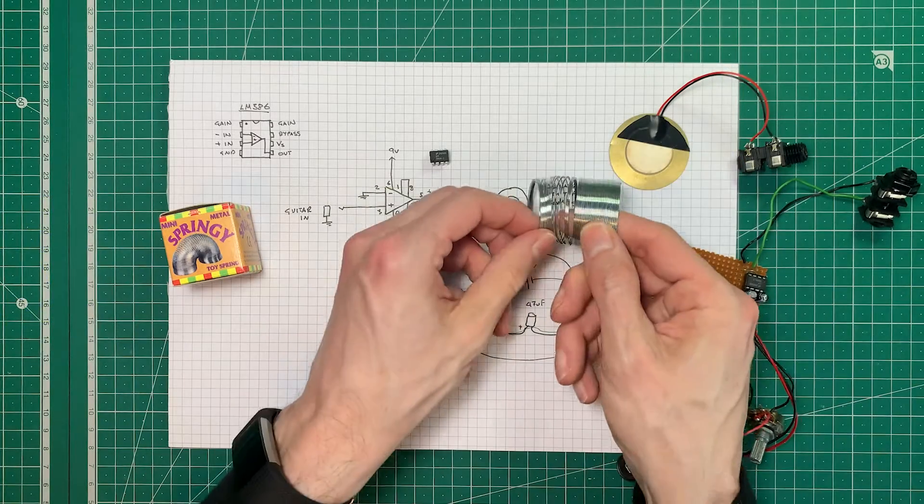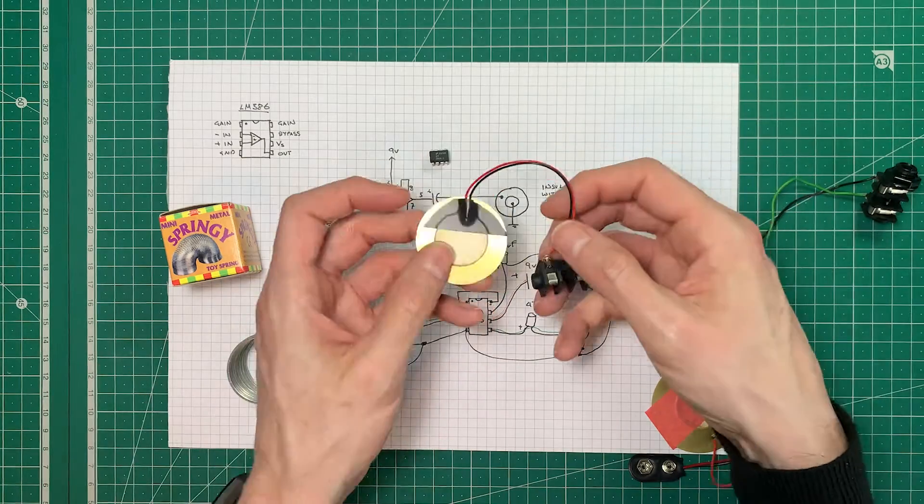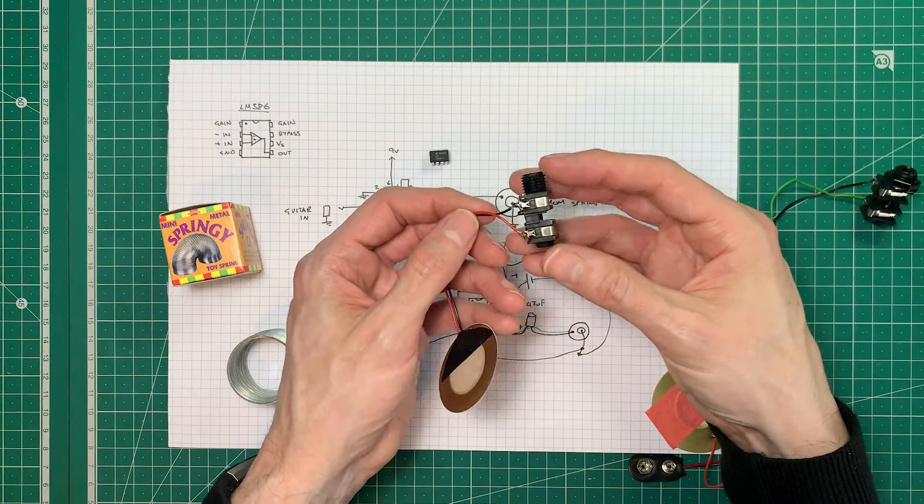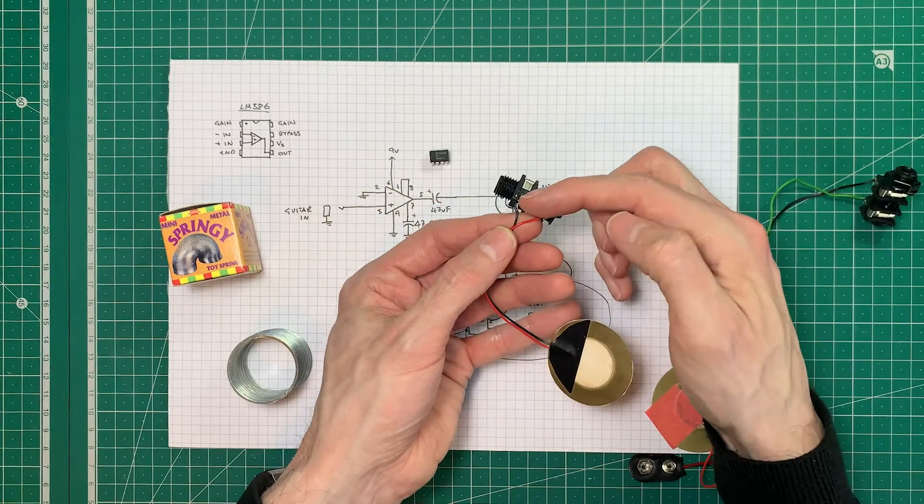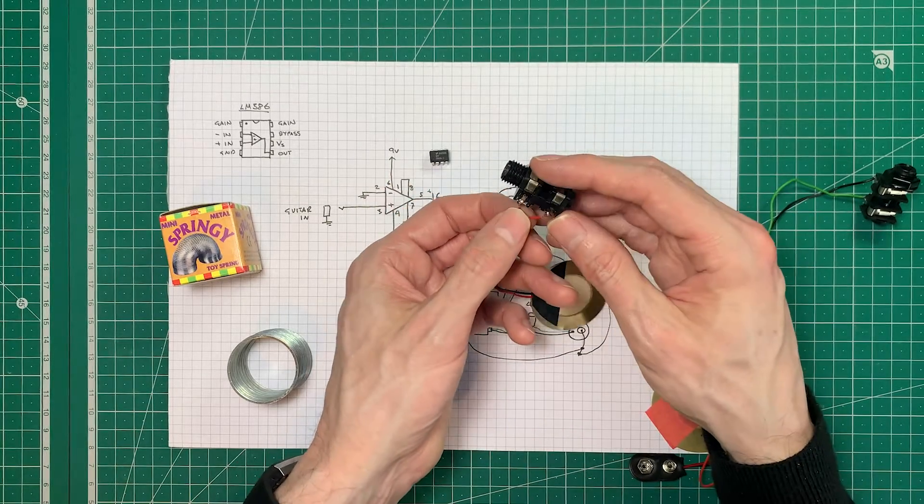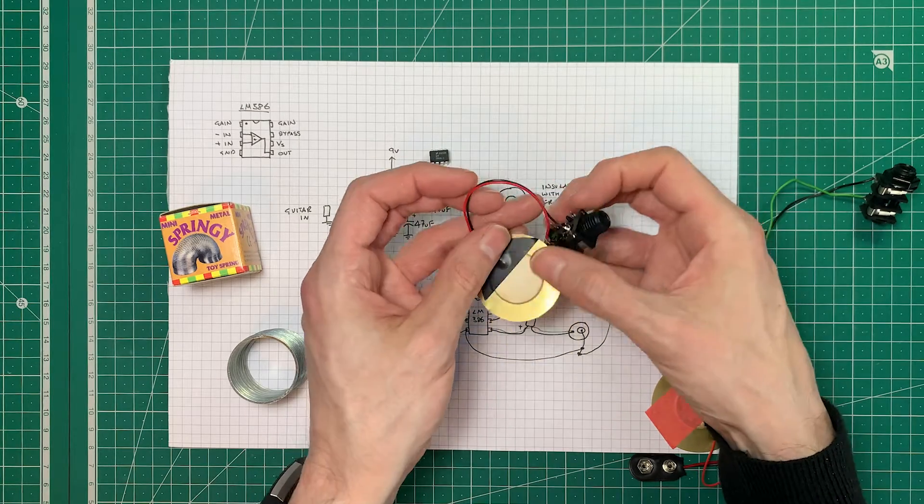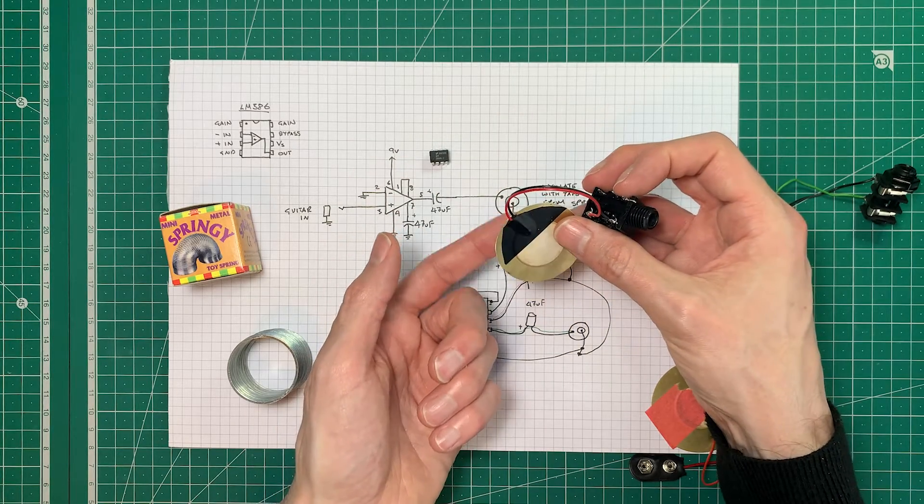That then of course is going through the spring and then on the other end we've got a very simple circuit. We've got a piezo connected to a jack, in my experiment I just had it crocodile clipped, this is another one that I found in the parts box and then I'll just plug my amplifier into this end and it will pick up anything on this pickup.